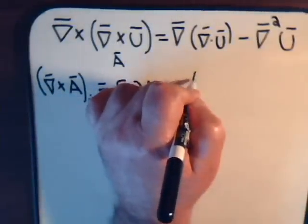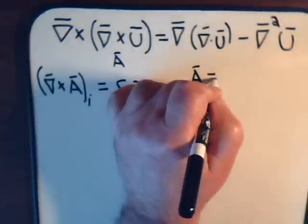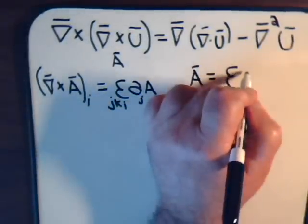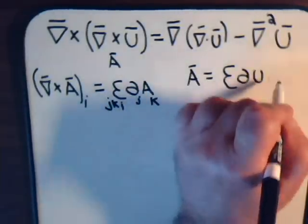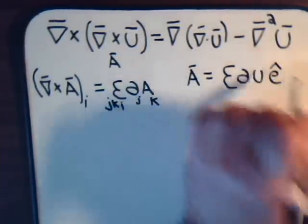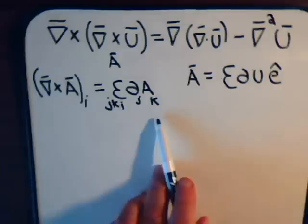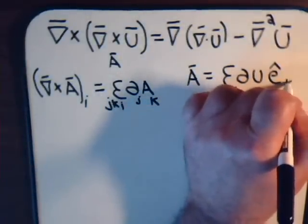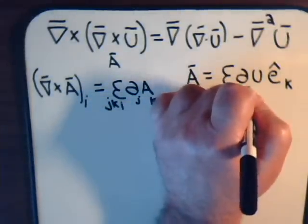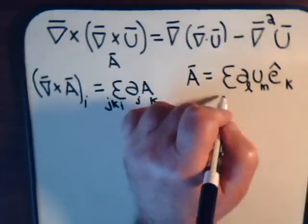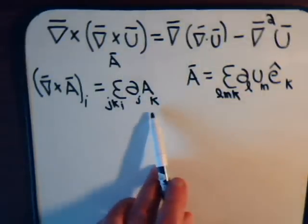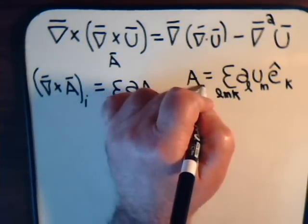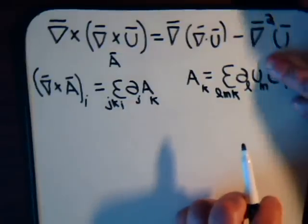So a we could write like this. Again, epsilon, partial with some index, some component of vector u, and a unit vector. Here we want a k-th component of vector a, so this will be k, and we can have labels or indexes l and m here. So we have l, m, k. And then again, from the previous videos, we know that the k-th component of this vector, a sub k, that's this without this.